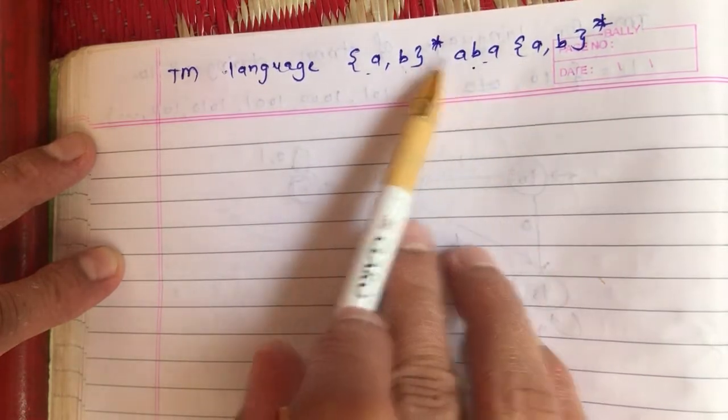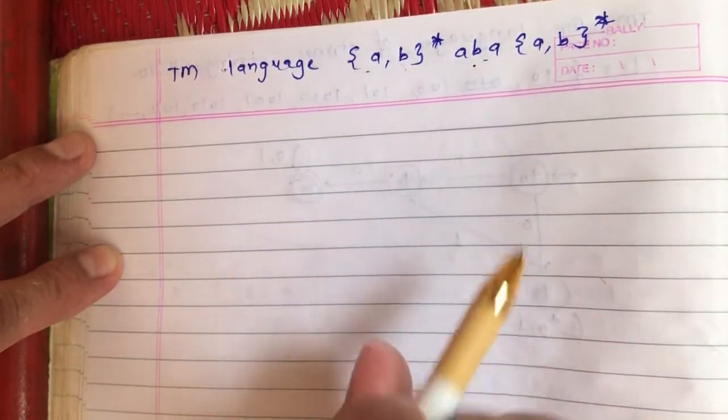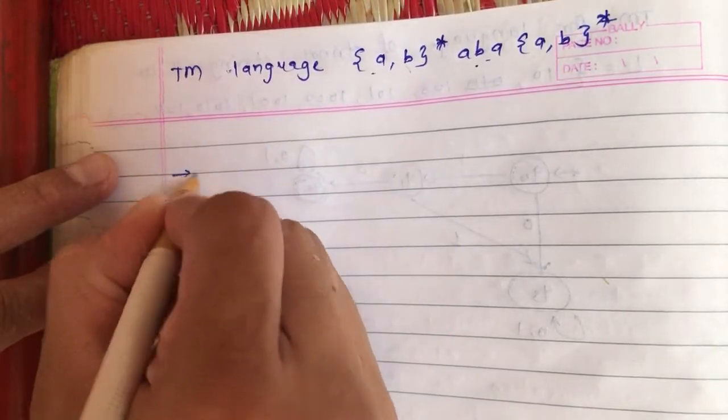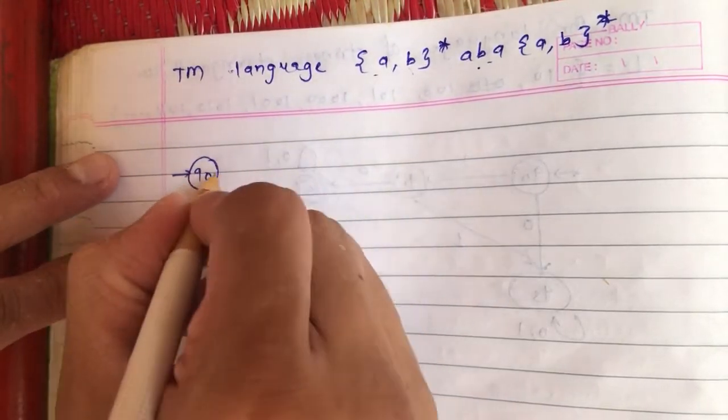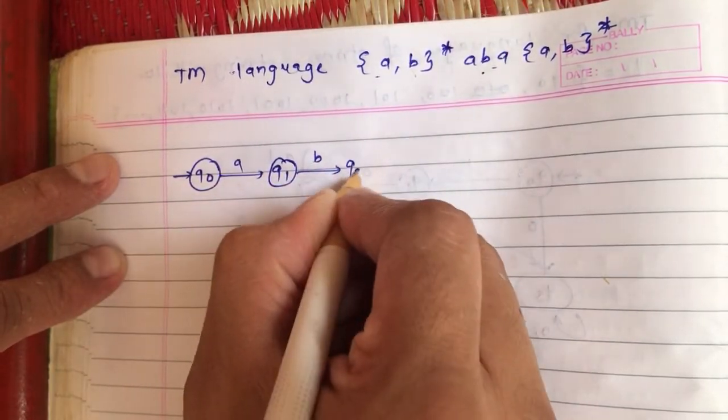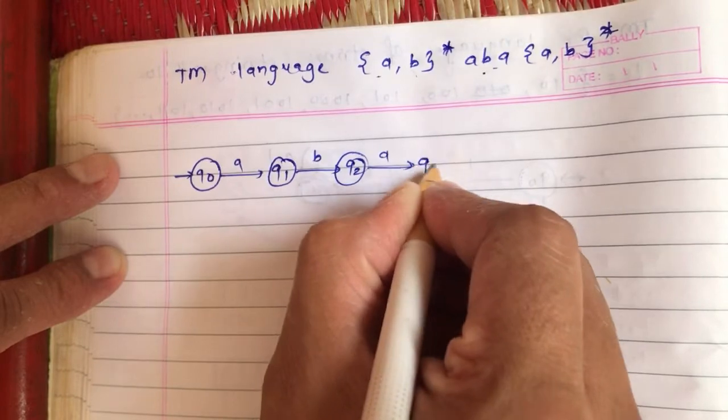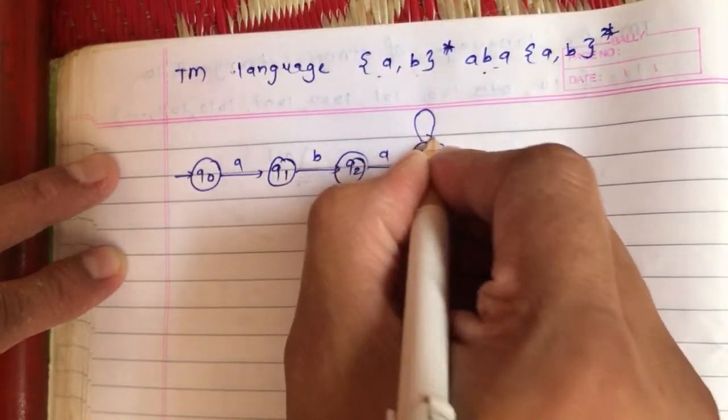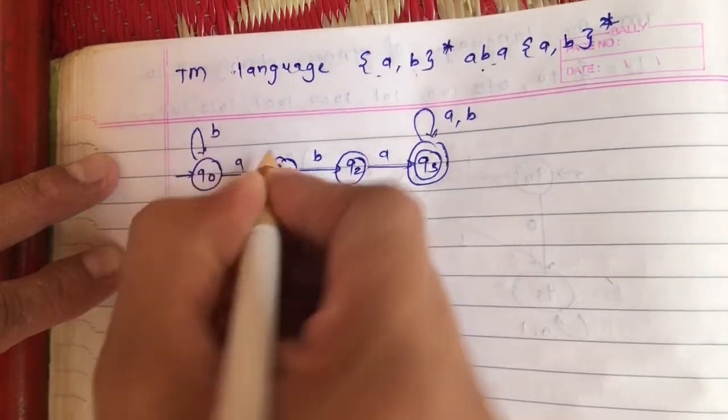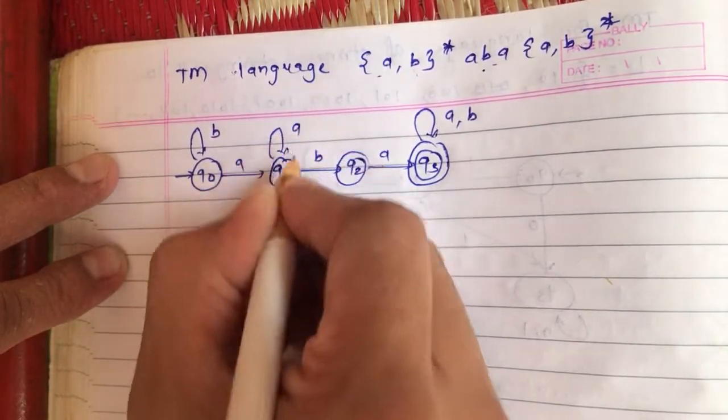Your string x which is part of your language should contain aba as substring. The DFA for this particular language will have aba as substring before we enter into an accepting state. After that we can have any number of a's and b's, and prior to that also if we have a combination of a's and b's we'll keep on moving.